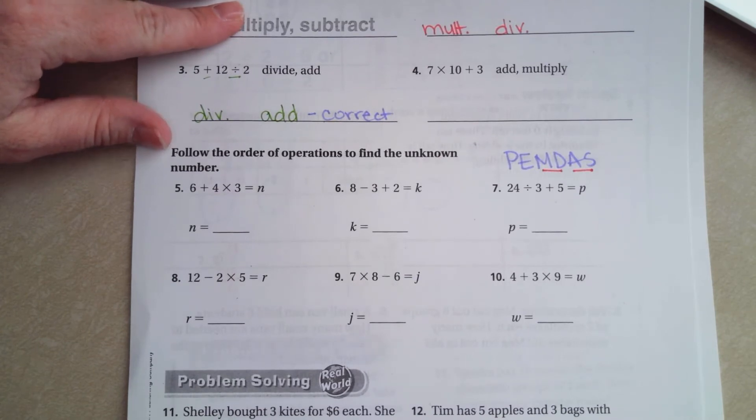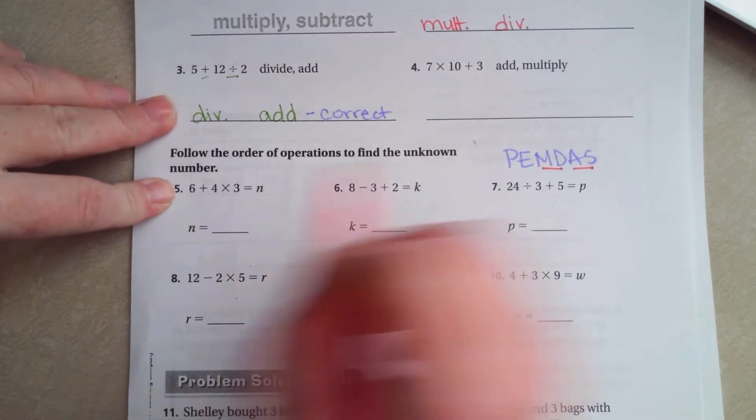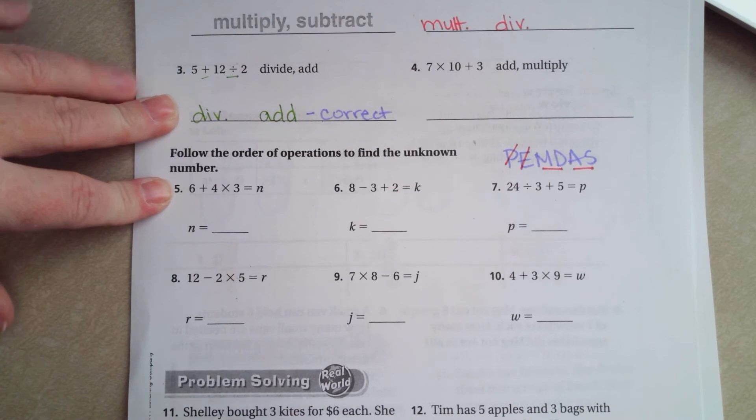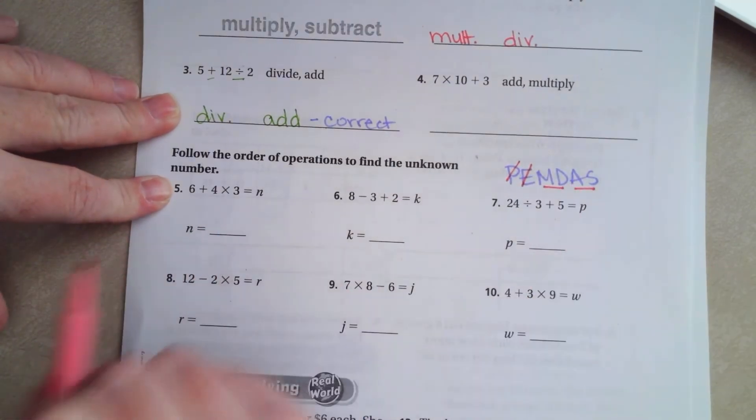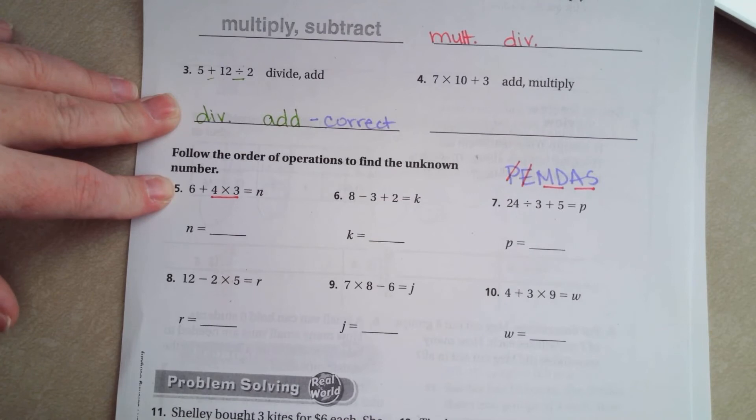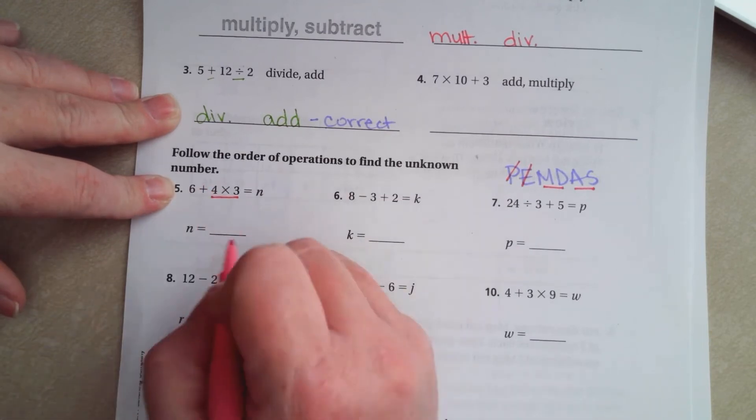So first in the problem that we need to worry about is going to be multiplication and division. We don't have to worry about parentheses or exponents right now. So multiplication or division first. Well 4 times 3 is first. So that's 12. 12 plus 6 is going to be 18.